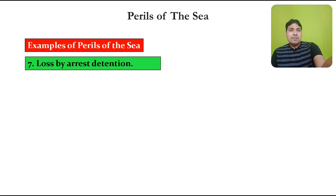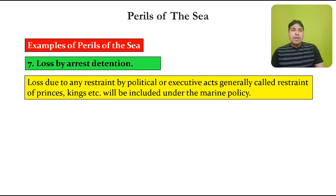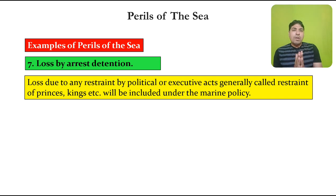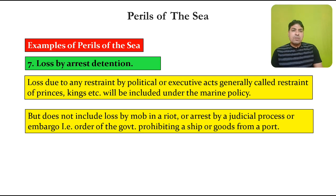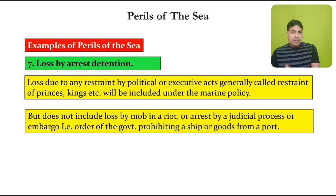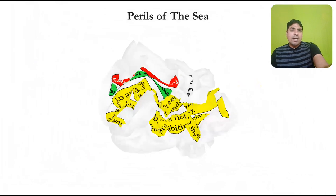The next example is loss by arrest or detention. Loss due to any restraint by political or executive acts — generally called restraint of princes and kings — will be included under the marine policy. However, it does not include loss by mob in a riot, or arrest by a judicial process, or an embargo order of the government prohibiting a ship or goods from a port.